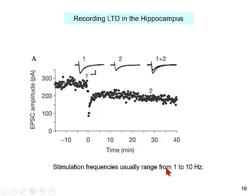When we record LTD in the hippocampus, we again use extracellular field recording. We give stimuli at moderate frequencies of 1-10 Hz. After moderate-frequency stimulation for just a couple of seconds, recording at much lower rates so as not to perturb the system, we get a decrease that reaches a steady state representing depression.